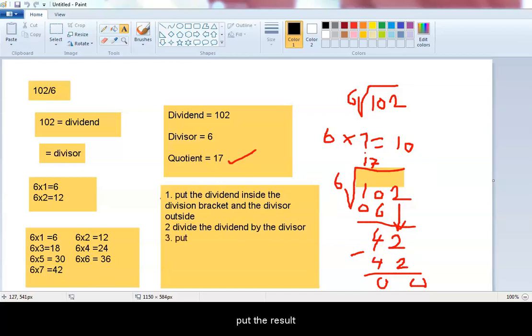Thirdly, put the result on the overbar. This is the quotient. So, like we divide 6 into 10 is 1, it goes 1 time. So we put 1 here on the overbar. 1 is part of the quotient.